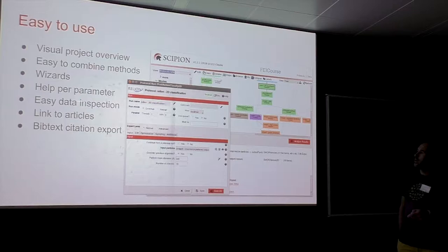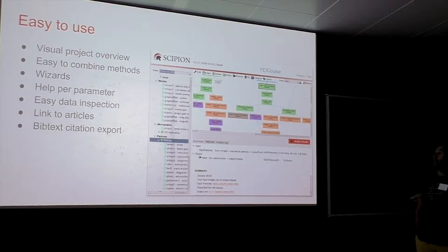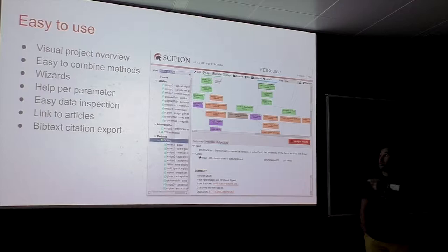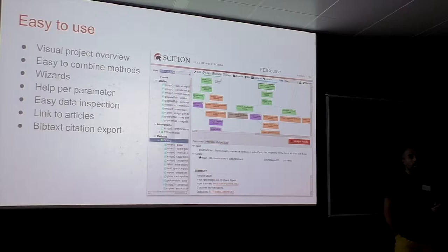All protocols are linked to articles. There is a methods tab that shows the article or articles associated with each method. You can even export that to a BibTeX file — so if you're working on your paper and all your work was done in Scipio, you can easily export that file in BibTeX format and have references for the methods immediately. It also provides a summary text to serve as a skeleton of what you've done for the paper.